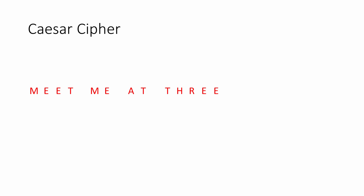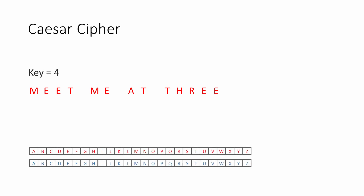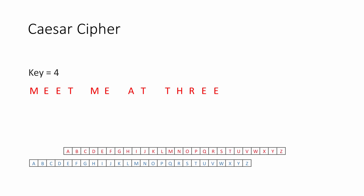Suppose you wanted to encrypt a plaintext message with an encryption key of 4. This means each letter in the message should be substituted with the letter 4 places along in the alphabet. So M becomes Q, E becomes I, T becomes X, M becomes Q, and so on. You can see why this is called a Substitution Cipher — each letter of the plaintext is substituted with a different one to create the ciphertext.